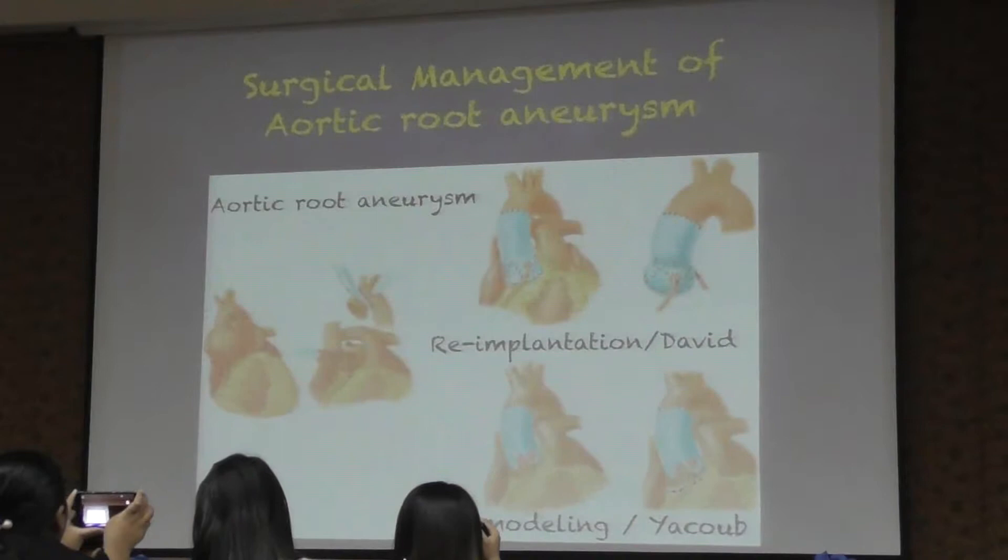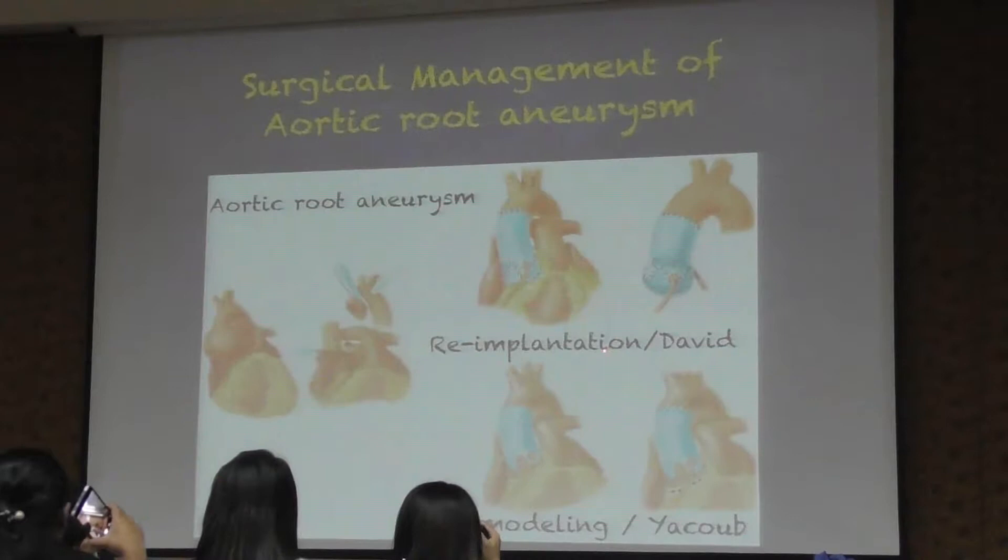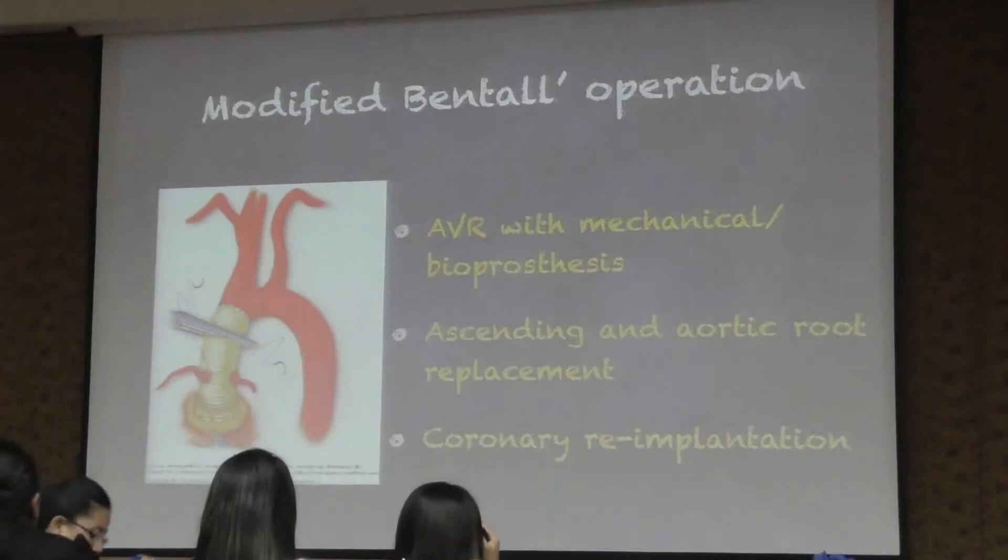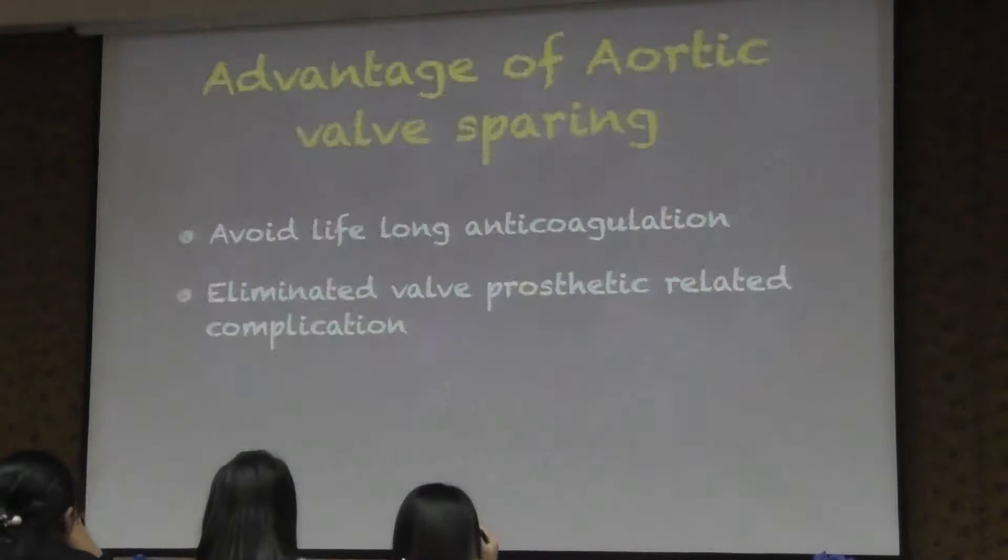The first option is what we call a valve-sparing procedure. The first one is the re-implantation technique, the second one is the remodeling, and the third one is the greater root replacement. These are the three surgical options.